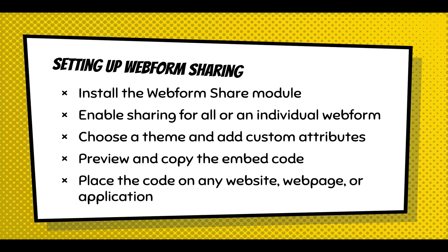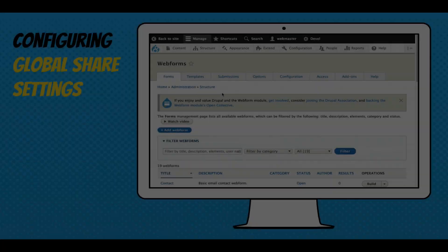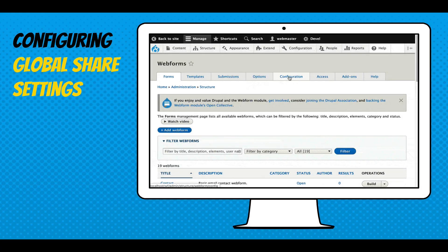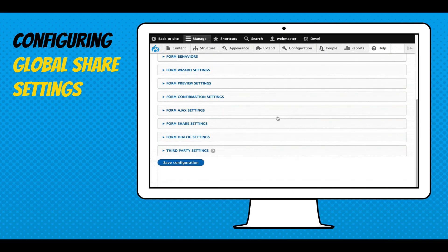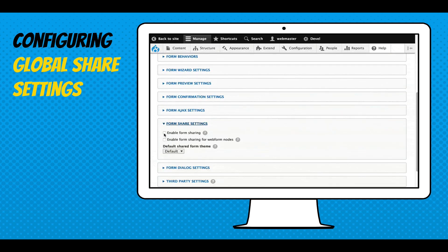Once you've set that up, someone goes in and just previews and copies that embed code and places it on any website, web page, or application. For global configuration, you go to the global configuration settings and scroll down, and you'll see form sharing settings. You can enable form sharing for the form or web form node, and you can pick a theme.